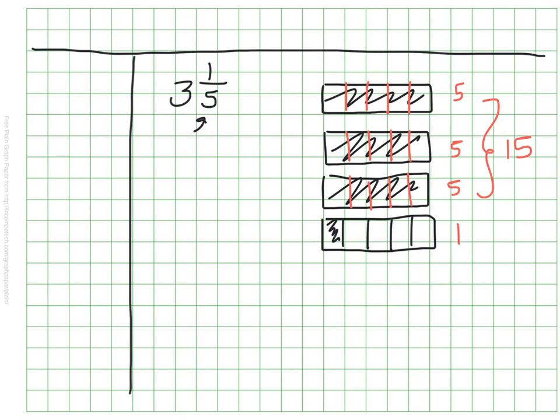So all together I have 16 pieces. Those pieces are all the size of 1 fifth. So the improper fraction that is equivalent to 3 and 1 fifth is 16 fifths. It's nice to see it this way, but I bet most of us do it without drawing it out. We can just do a couple quick mathematical calculations and get the same answer without having to draw it.